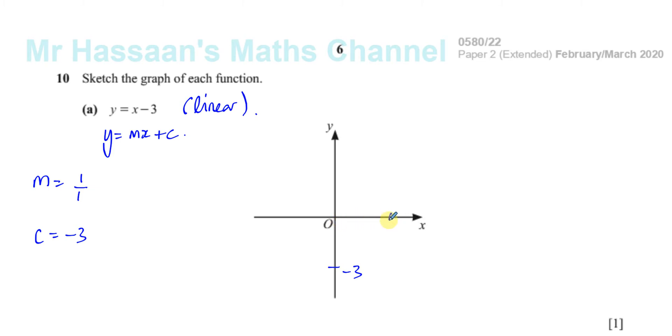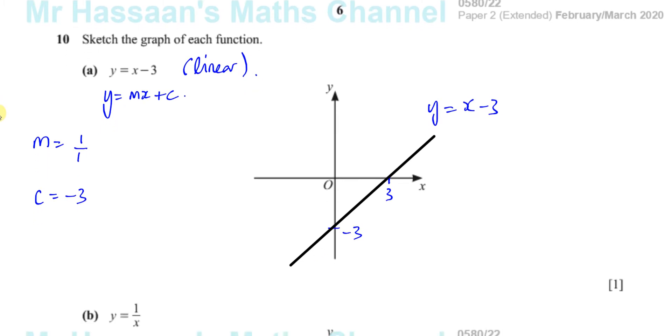So that means it's going to pass through 3 over here on the x-axis, and you can see that from when you put y equals 0, which is on the x-axis. When y equals 0, x equals 3. So we can then draw the line. We don't actually have to put this 3 and the x-axis there, but that's helpful. So there we have y equals x minus 3 drawn. That's one mark. You don't have to even show any steps, really. You can just draw it straight away.